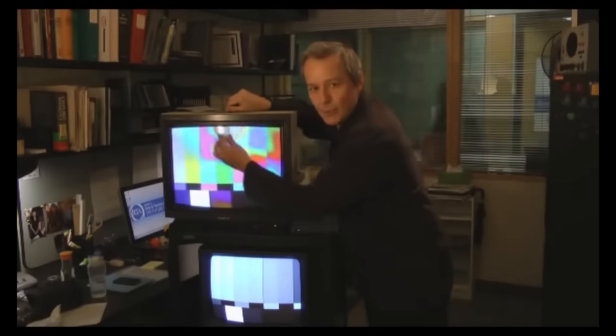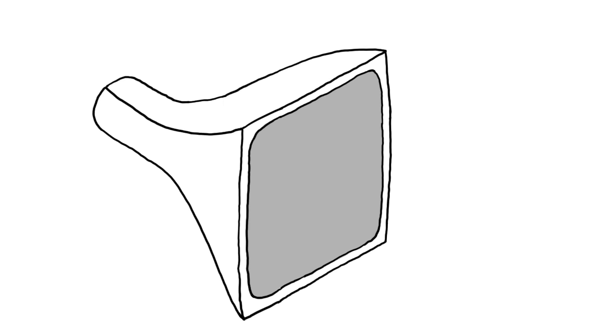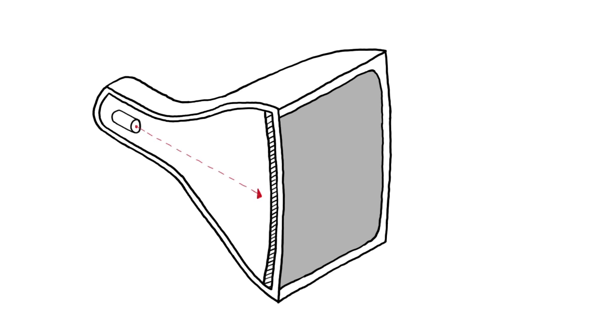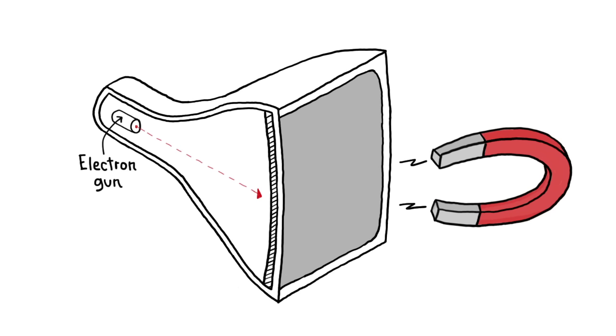But why do magnets affect CRT monitors? Well, a CRT monitor produces pictures on screen when electrons fly towards the screen via an electron gun. Therefore, presence of a magnet nearby can permanently magnetize the CRT monitor. This can be fixed by degaussing or demagnetizing the CRT monitor.